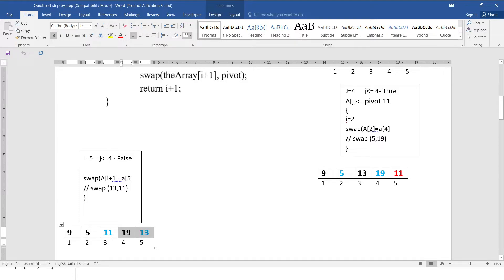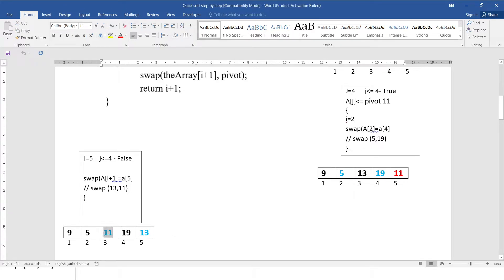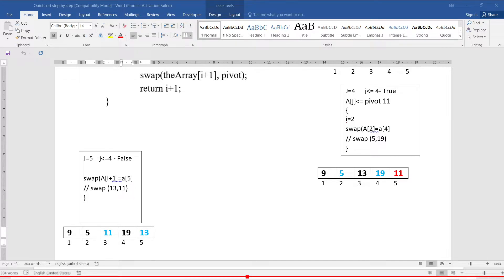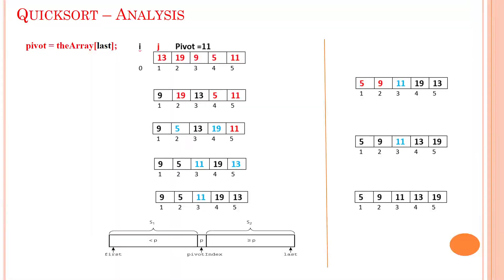Partitioning is complete. The pivot element 11 is positioned in the right place. The list is now partitioned into S1 and S2: a[3] is swapped with a[5], so 11 comes into the third index and 13 into the fifth index. The left side of the pivot element is sublist 1, and the right side is sublist 2. Now we must sort both the left and right halves recursively.